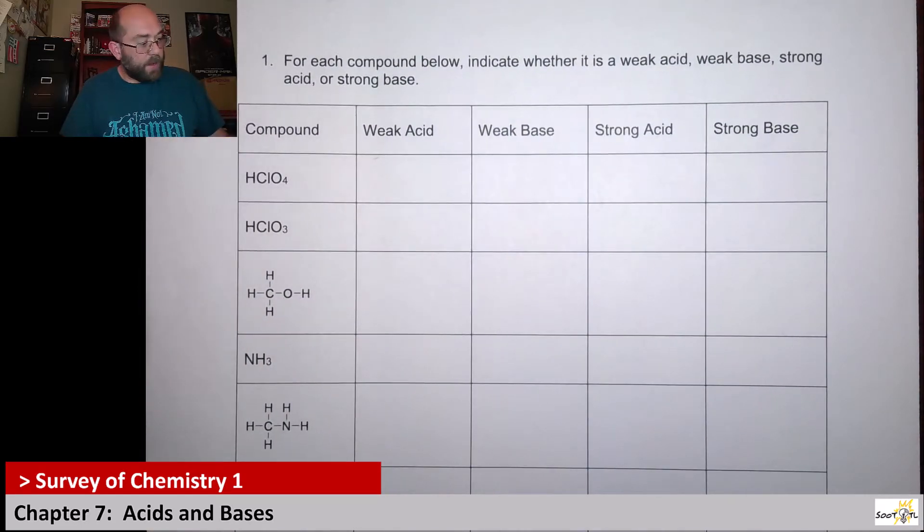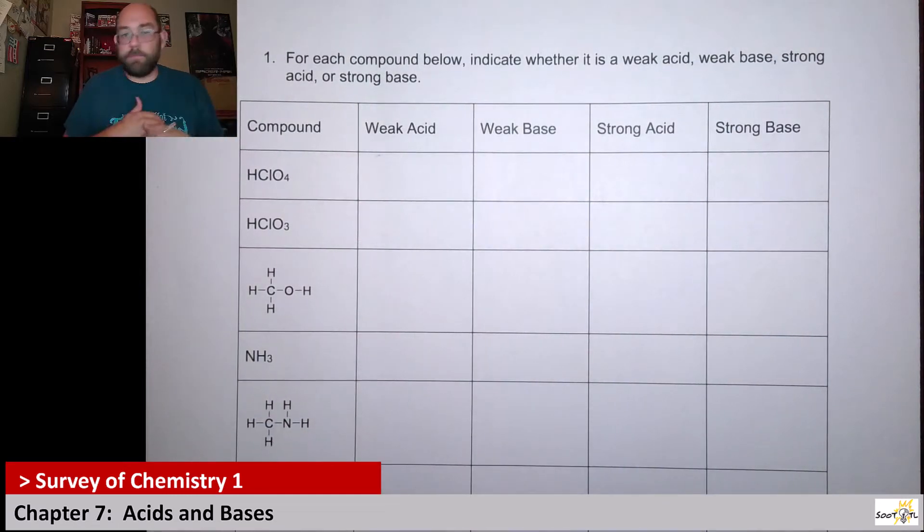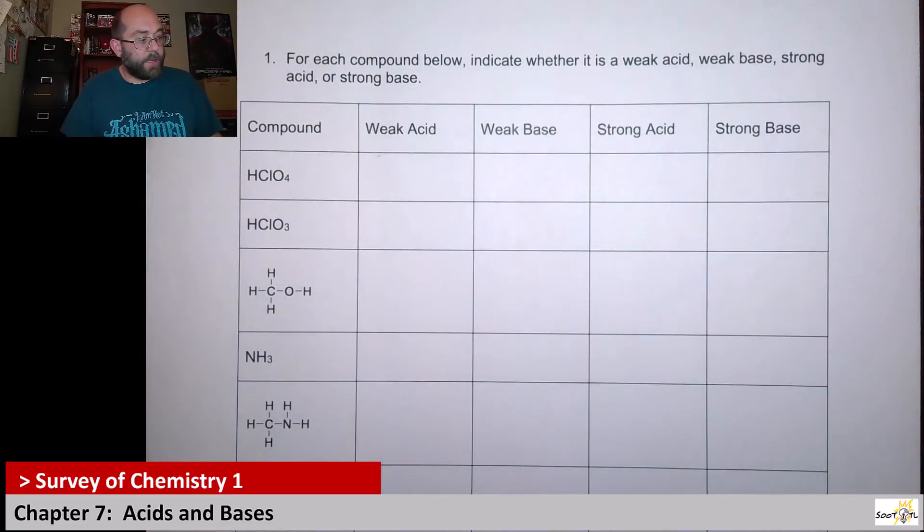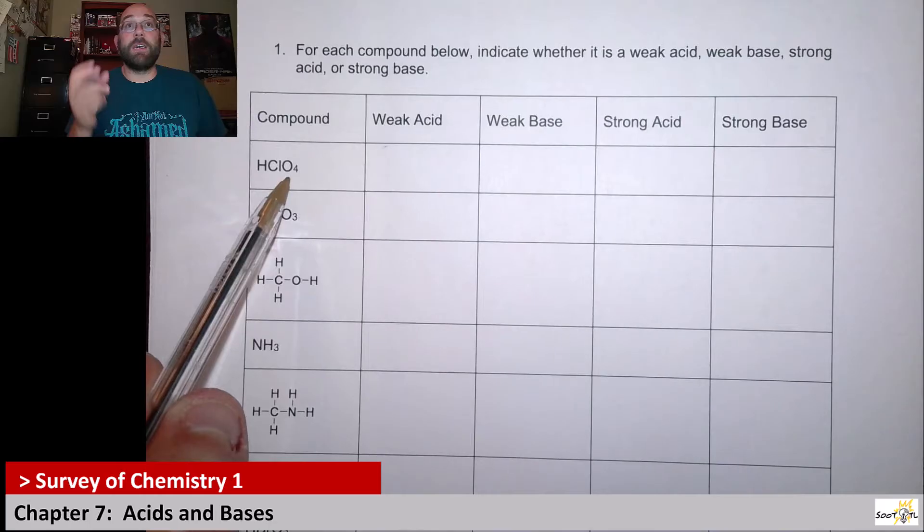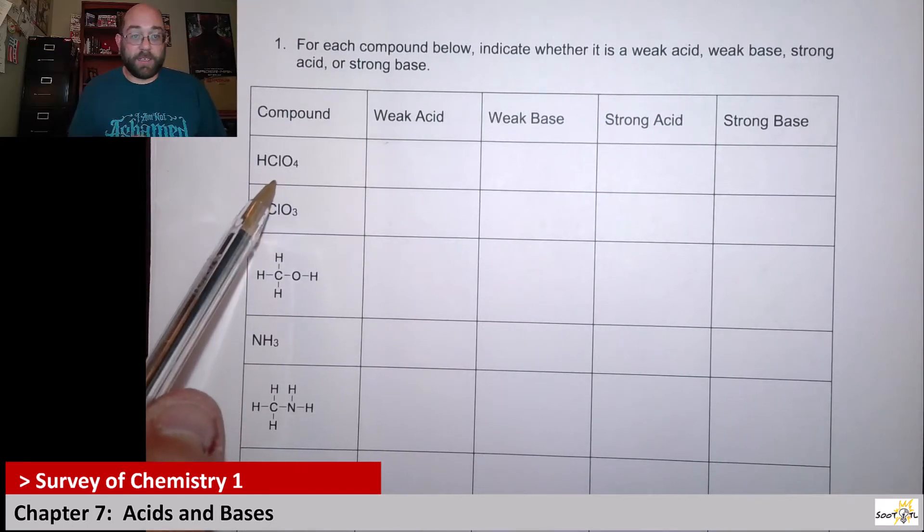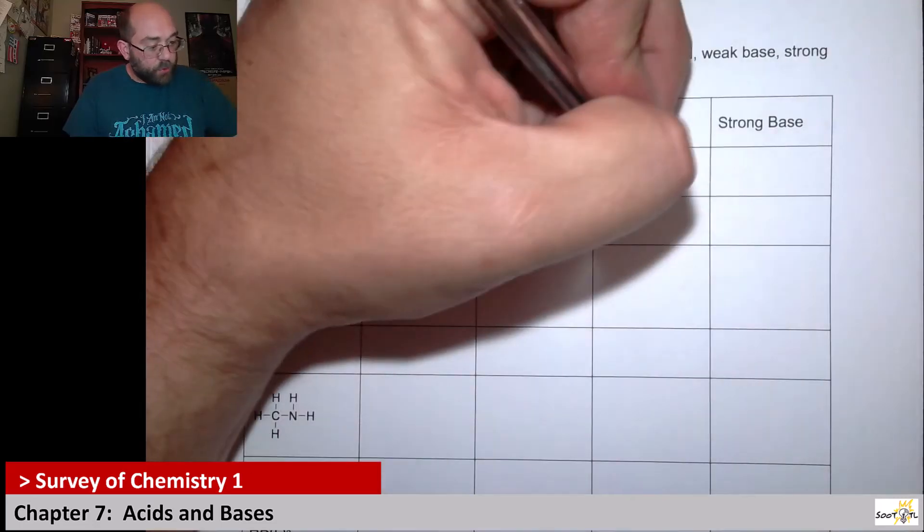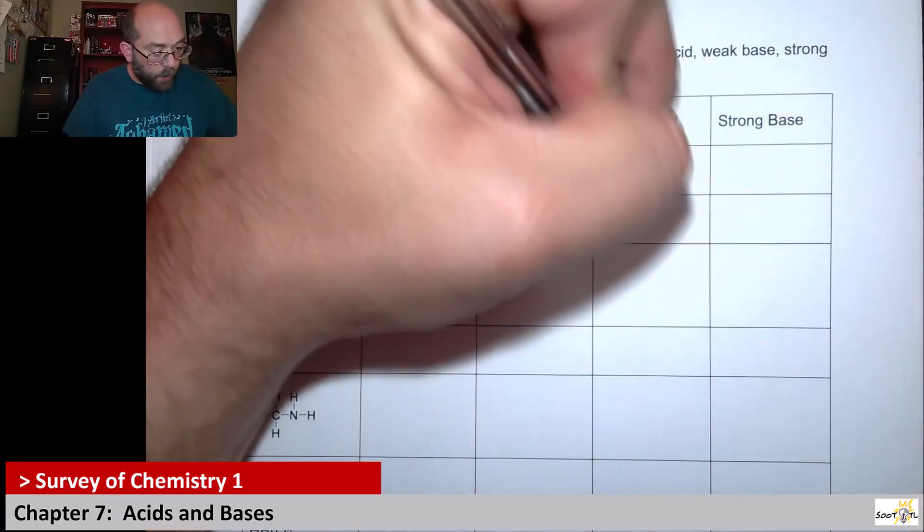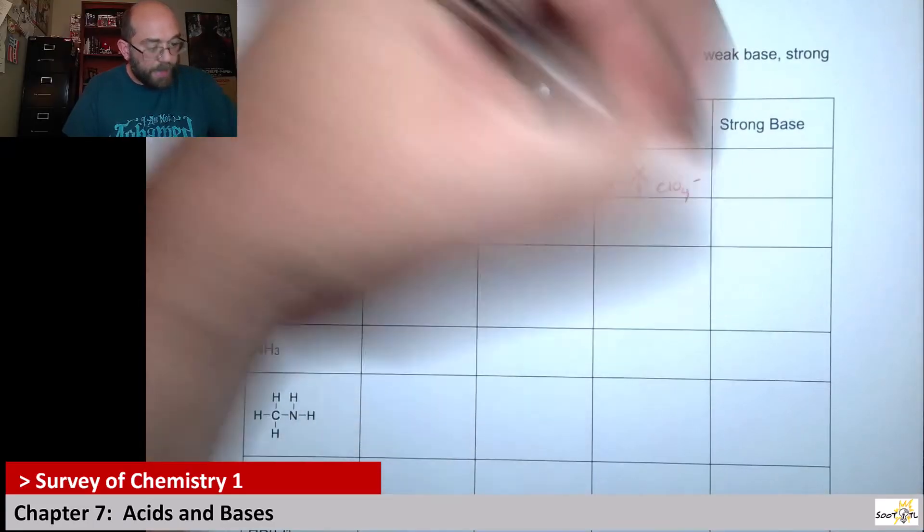I'm going to put a check mark where it falls, whether it's a weak acid, weak base, strong acid, or strong base. Here we have HClO4. This is that perchloric acid that was in that list we saw previously, so perchloric acid means it is a strong acid. That will 100% break apart into H plus and ClO4 minus.